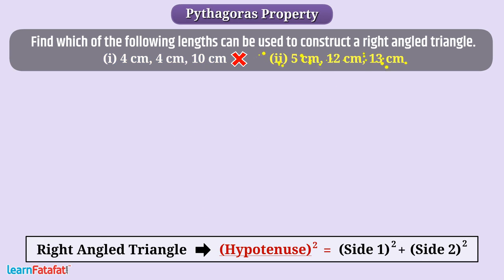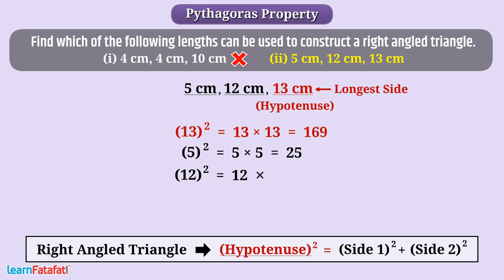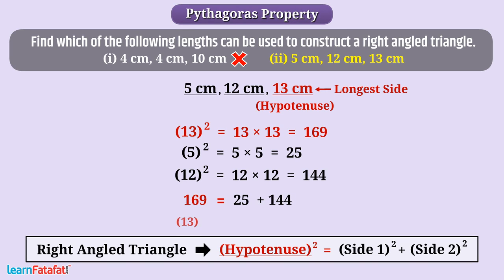Let's talk about the second case. 13 squared is equal to 13 multiplied by 13, which is 169. 5 squared is equal to 5 multiplied by 5, which is 25. And 12 squared is equal to 12 multiplied by 12, which is 144. Since 169 is equal to 25 plus 144, 13 squared is equal to 5 squared plus 12 squared. Thus, 5 cm, 12 cm, and 13 cm are the lengths of a right angle triangle.